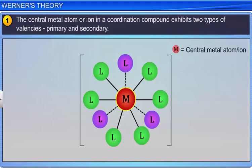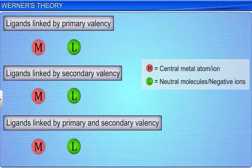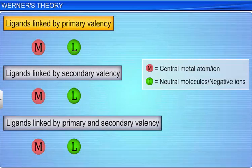While writing the structure of the metal complexes, the ligands that are linked by primary valency are shown by dotted lines, while those linked by a secondary valency are shown by thick lines.